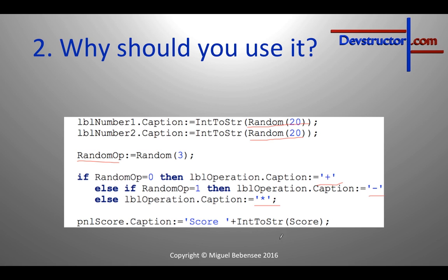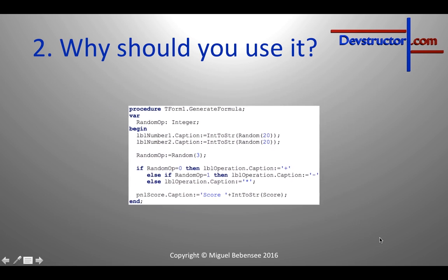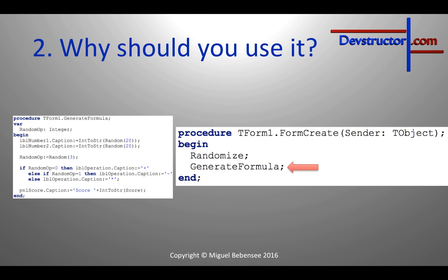We generated a random operation which could be plus, minus, or multiplication. We also wanted to show our score in the panel score. We needed this routine at multiple places — we wanted to start the application with a randomly generated formula, so we had to execute this routine at the start of the application. But we also had to execute this routine after the user typed in the correct result, so they could continue with a new formula. Therefore we created a procedure, and every time we wanted to use it we just called 'generate formula'.